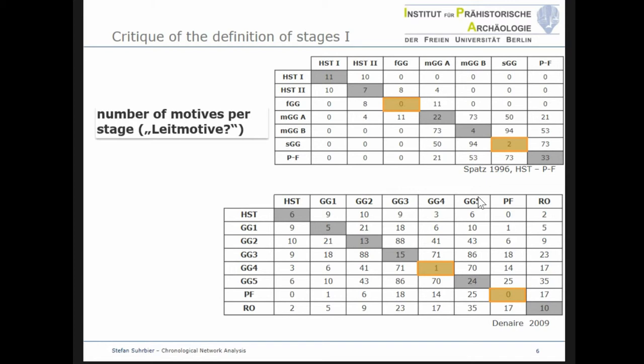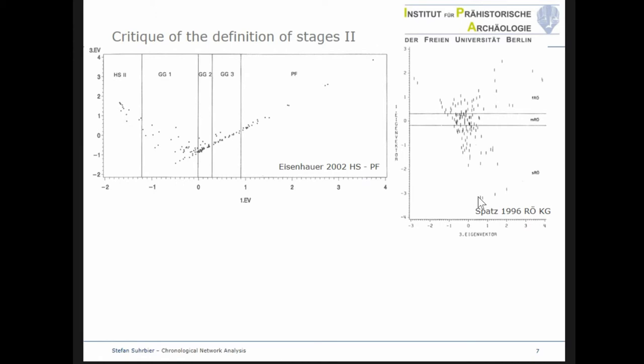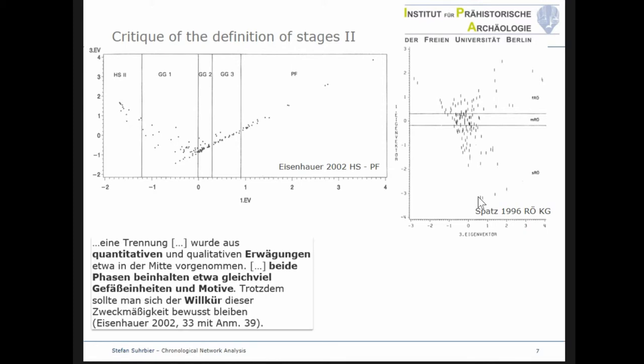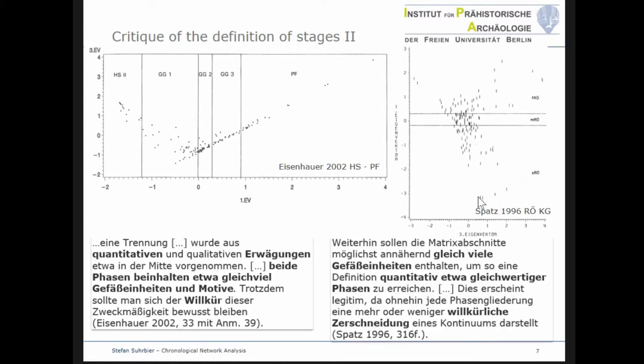A closer look at the definition of chronological stages in the CA of Schwarz for the Neckar area or Eisenhauer for the Lech area shows that the boundaries between stages were not always placed within gaps in the CA, but rather arbitrarily. Both authors admit that their definition of chronological stages aimed at an evenly distributed number of motifs per stage. Since they did not consider the methodological pre-conditions of the CA, these chronological frameworks lacked the necessary empirical basis. Taken together, the results of the CA for the Middle Neolithic were not really satisfying, and other approaches with multivariate statistics were not successful either.